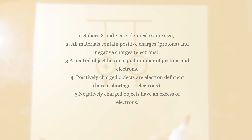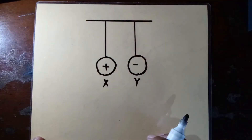The fourth thing is that positively charged objects are electron deficient — they have a shortage of electrons, meaning there are more protons than electrons. Therefore, sphere X has a deficiency of electrons, hence it is positively charged. Negatively charged objects have an excess of electrons, so sphere Y has more electrons than protons, hence it is negatively charged.